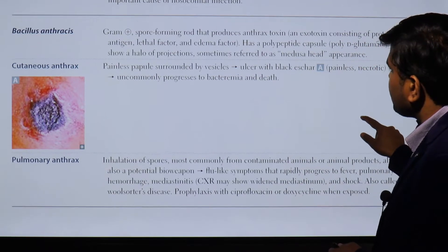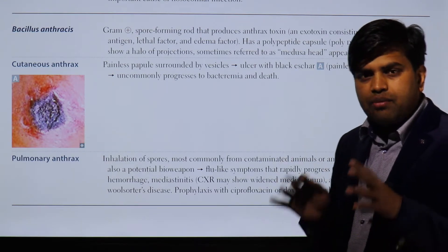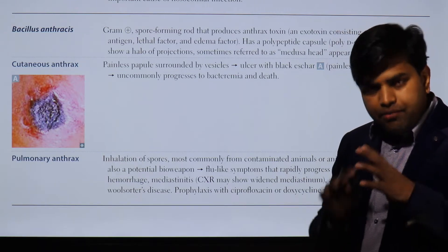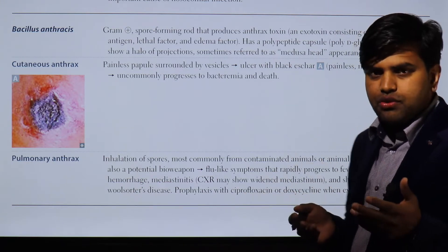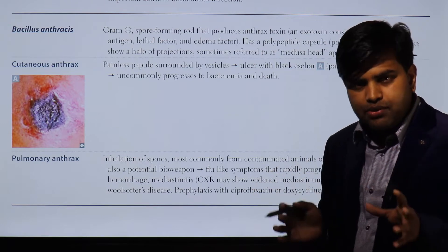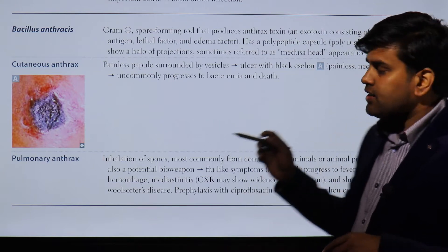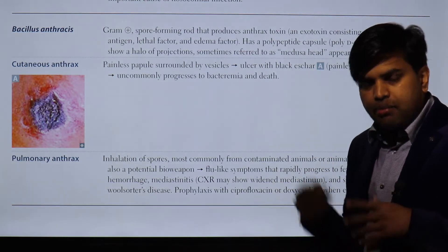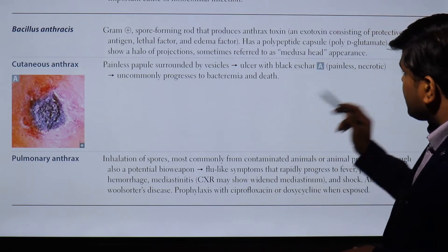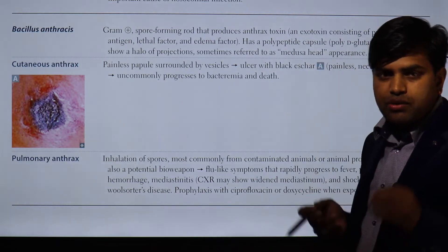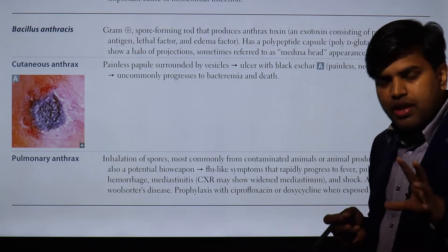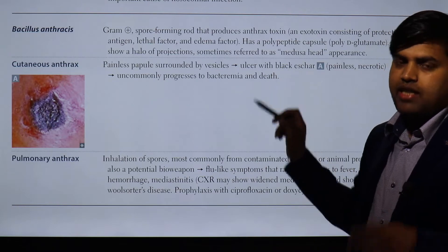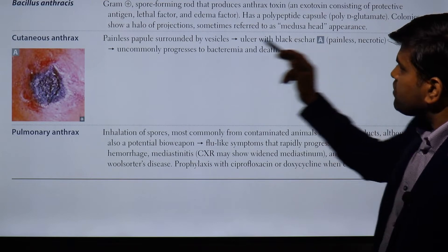An important exam point: all bacteria that have a capsule are made of polysaccharide in nature — except Bacillus anthracis, whose capsule is made of polypeptide, specifically poly-D-glutamate. This is a unique exception and a high-yield exam point. So remember: all bacterial capsules are polysaccharide except Bacillus anthracis, which has a polypeptide capsule.